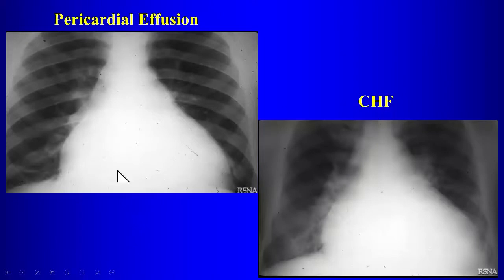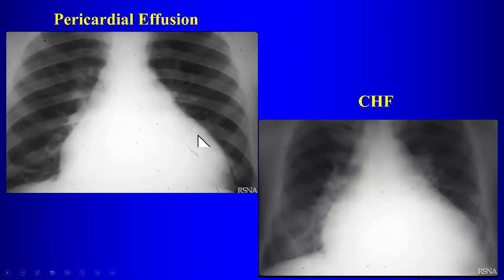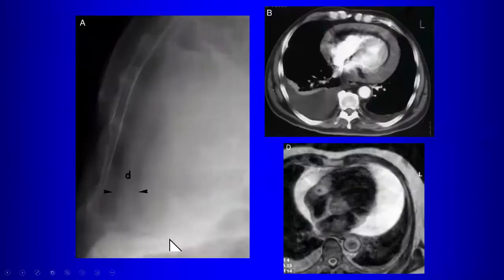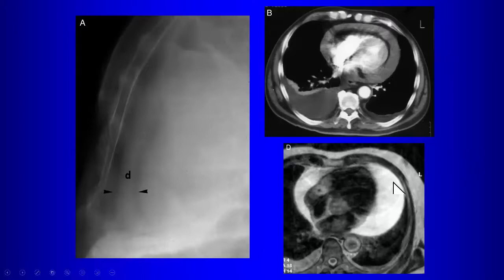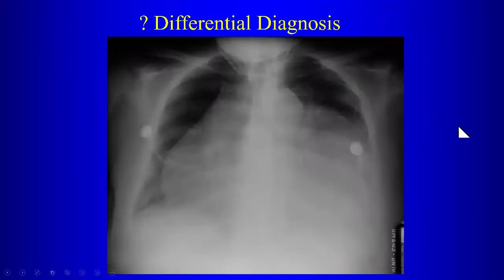An enlarged cardiac silhouette from pericardial effusion differs from CHF — in CHF you see pulmonary venous congestion because of actual cardiac enlargement, whereas with pericardial effusion we're just looking at fluid causing enlargement of the silhouette. Pericardial effusion is easy to diagnose on CT, and on T2-weighted MR it will be very bright in signal.